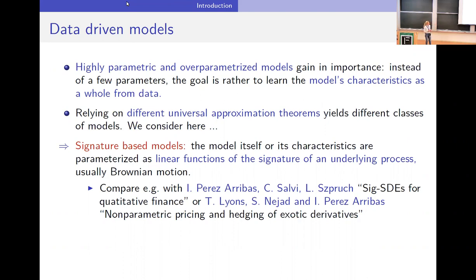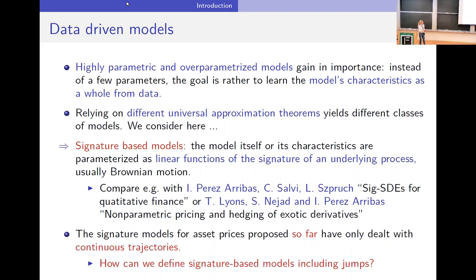Usually what has been done in the literature is Brownian motion. I would like to refer to works by Immanuel Perez-Aribas, Christopher Salvi, and Lukas Bruch on signature SDEs for quantitative finance, and also the now very famous paper by Terry Lyons, Sinan Nejad, and Immanuel Perez-Aribas on non-parametric pricing and hedging of exotic derivatives, which was one of the starting papers where signature was used in finance.